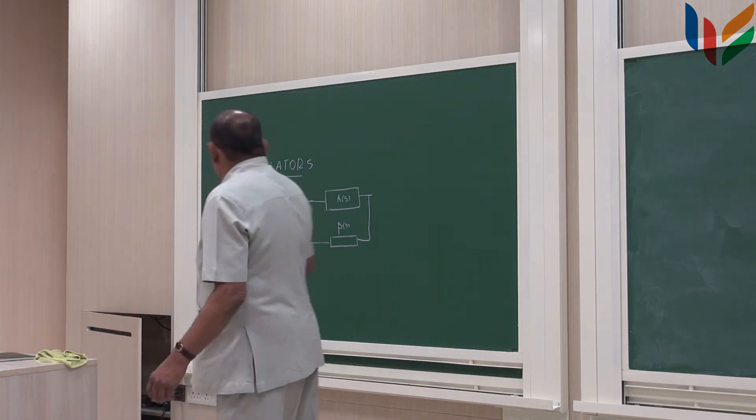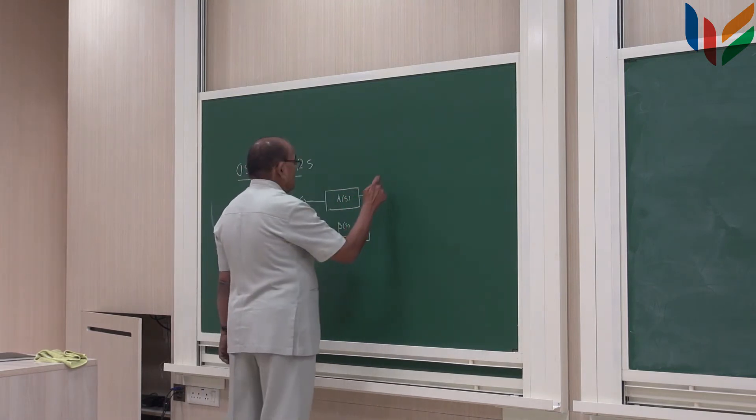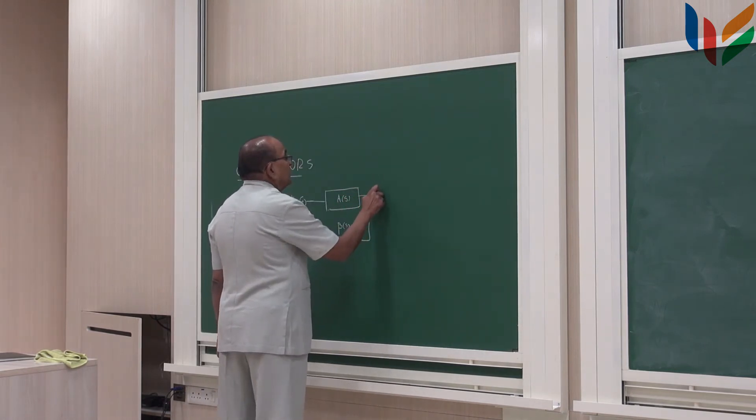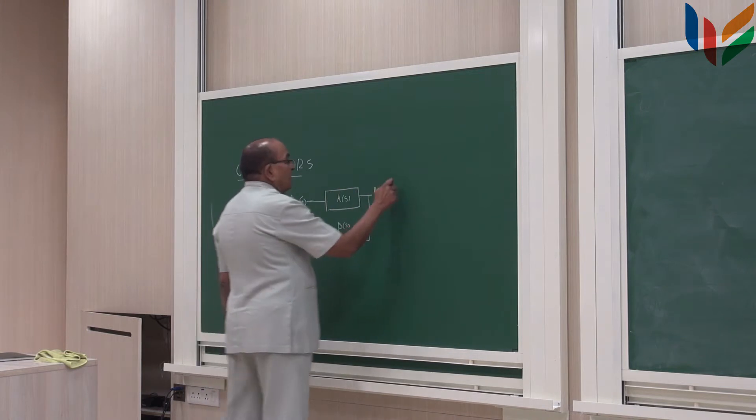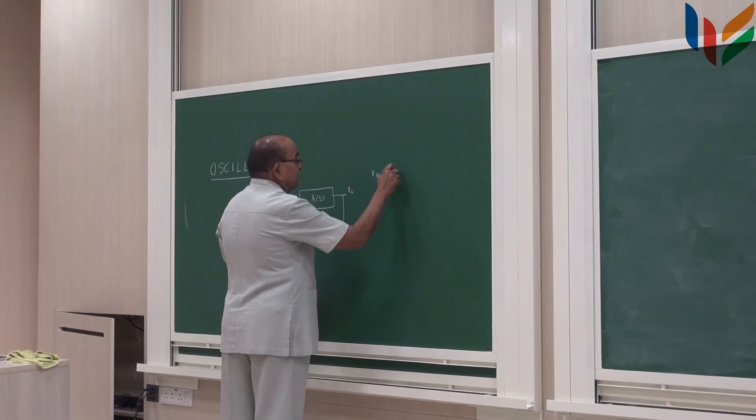So, then the same arguments hold good that this is V0, then Vin plus V.